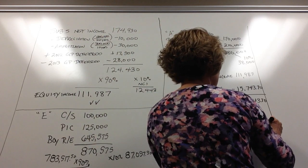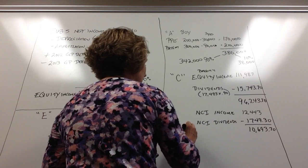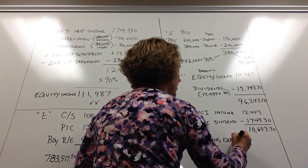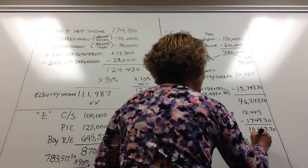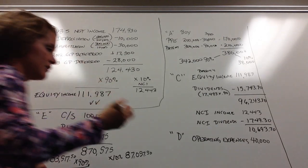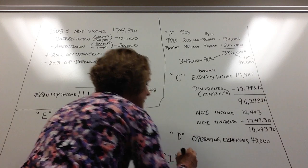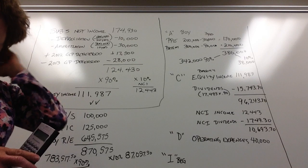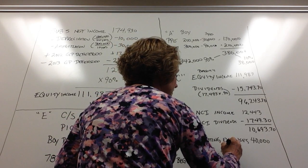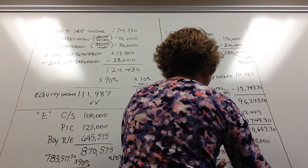Depreciation stays the same — operating expenses total $40,000. For the I entries, only the beginning profit allocation goes into the equity investment account. The beginning deferred profit of $17,500 is also split: $17,500 × 0.9 = $15,750 goes to the equity investment (parent), and the remaining $1,750 stays with the NCI.